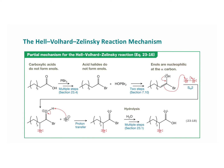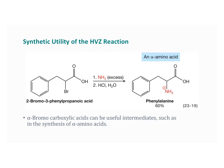Because Br⁻ is a really excellent leaving group, alpha-bromo acids are used synthetically as intermediates all the time. For example, they can be used to synthesize alpha amino acids like phenylalanine by a nucleophilic substitution reaction with aqueous ammonia — the bromine is replaced by the amino group, making this very useful in synthesis.